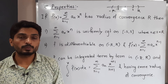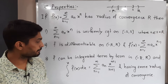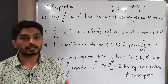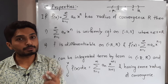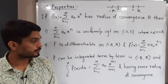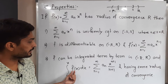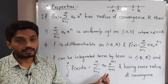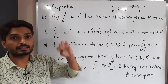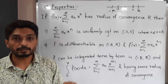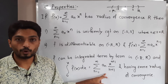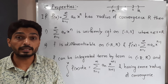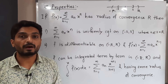The third property is that we can integrate the power series term by term on the interval (-R, R). Summation and integration can be interchanged. Integrating each term, since n is a constant, the integral of x raised to n is x raised to n+1 divided by n+1. The resulting power series has the same radius of convergence R.